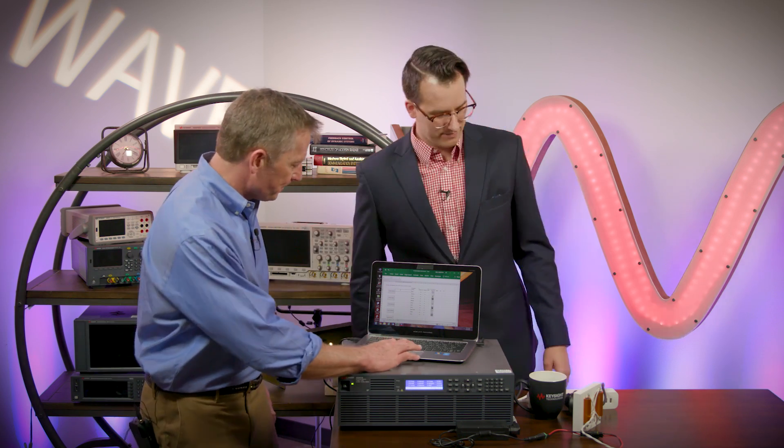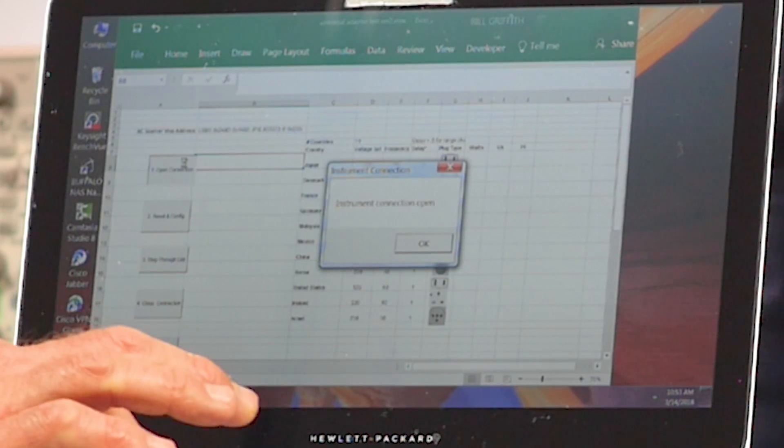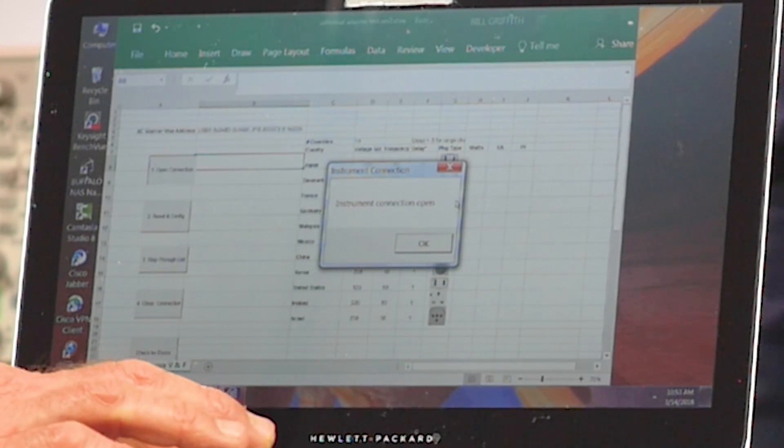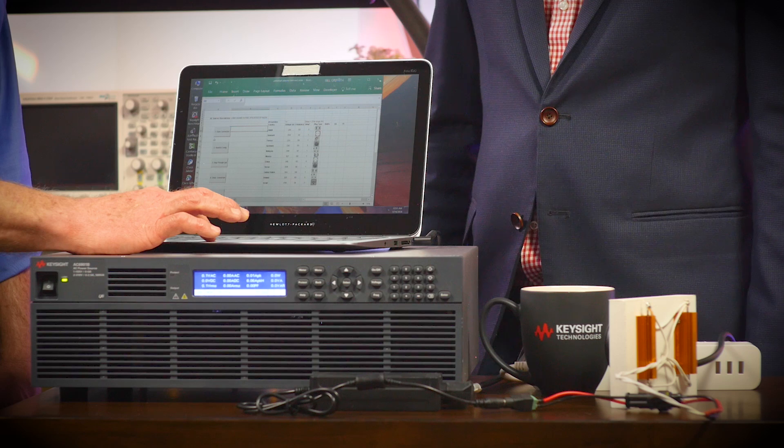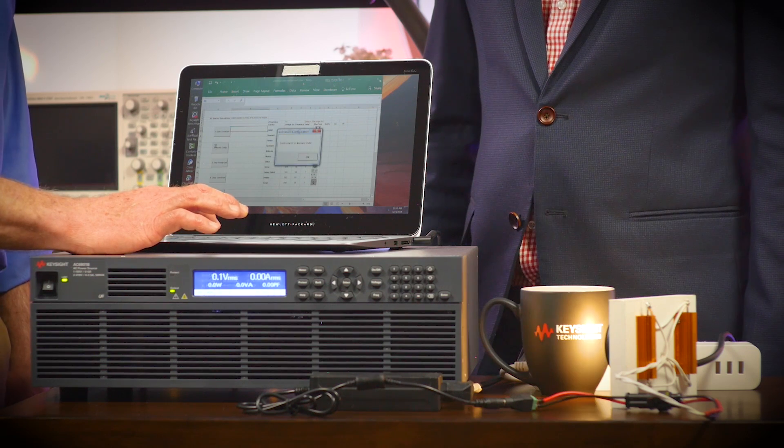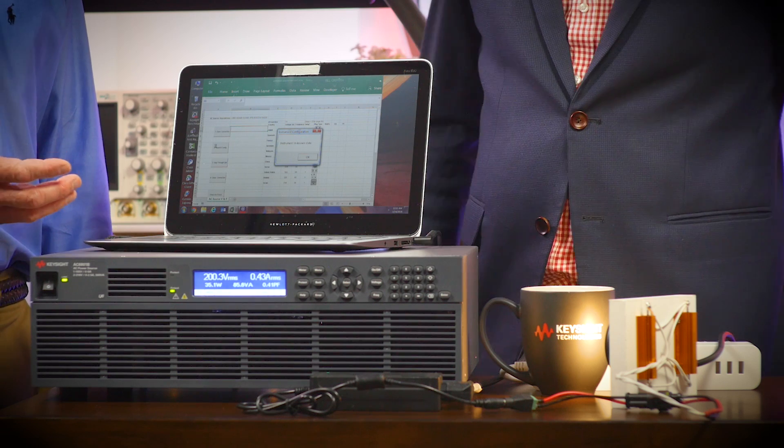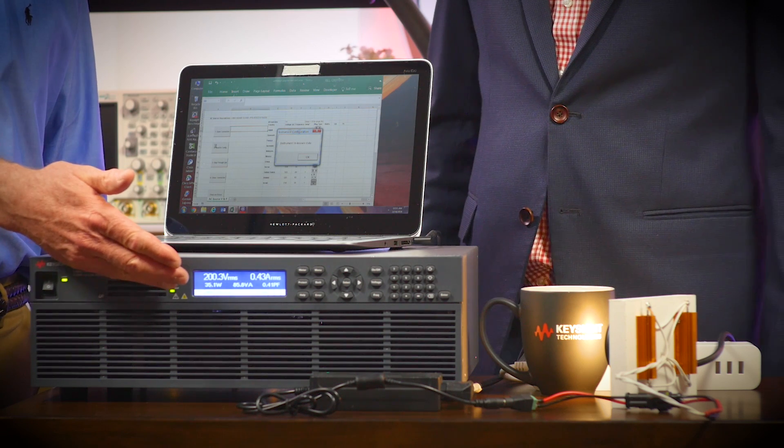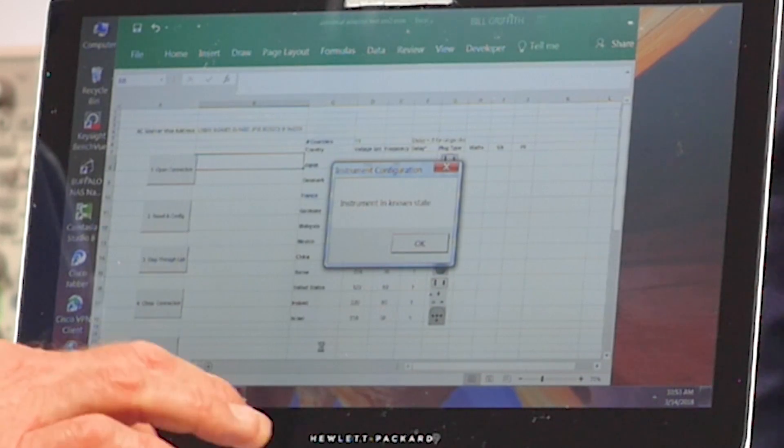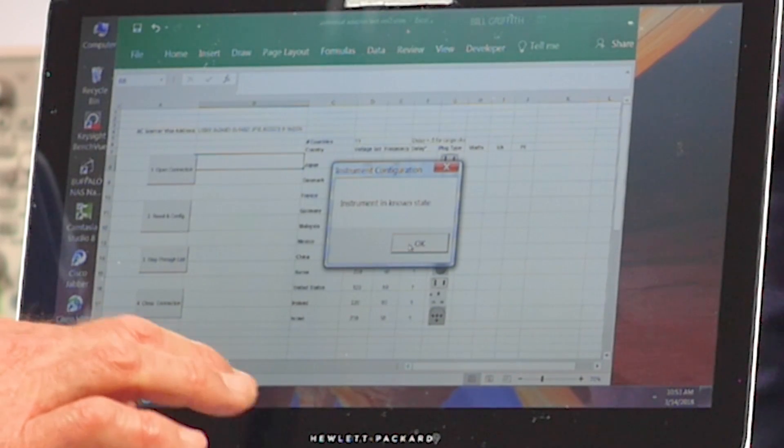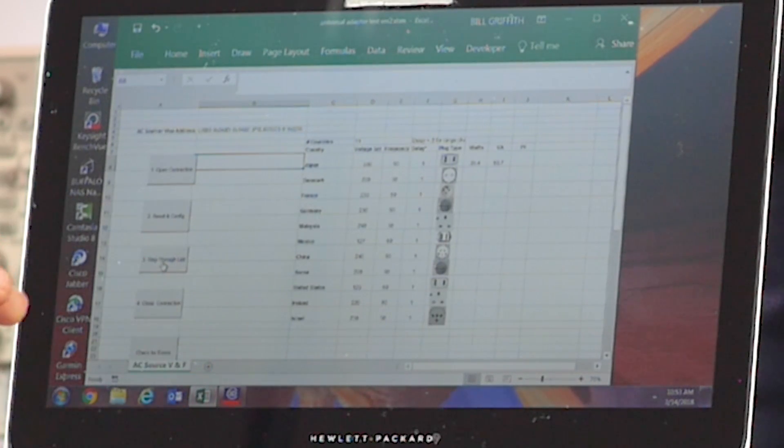Awesome. Very cool. So let's go ahead and get started. So the first thing we'll do is we'll go ahead and open our connection to the AC source, which we've done. Well, next we're going to put our AC source in a known state. So as you can see, our light has turned on now, and it's outputting voltages also from the front panel. It's already making measurements. So let's go ahead and run through our loop, which will test out each of those countries' voltages and frequencies.